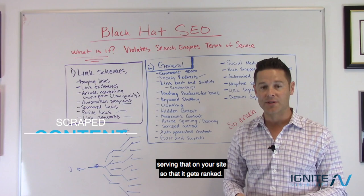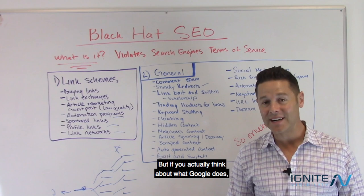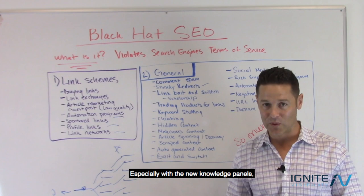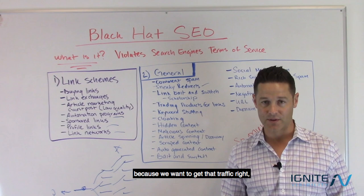Scraped content — stealing content from around the web and serving it on your site to get it ranked — is also not allowed. Interestingly, Google won't allow you to scrape content per their terms of service, but if you think about what Google does, they scrape content to serve it in their search results, increasingly so with knowledge panels, rich snippets, and meta titles and descriptions. Of course, we want to comply with Google because we want that traffic — it's the biggest search engine in the world.